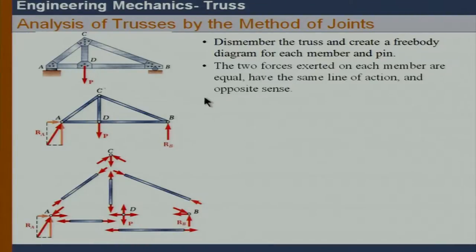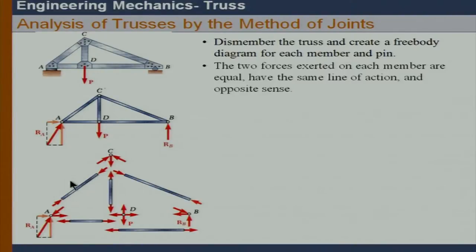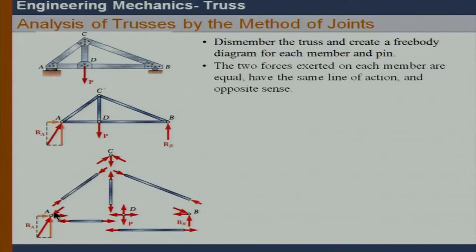As we can see, for any member — say member AC — we use directions to represent whether it is in compression or tension. If AC is in compression, we represent it accordingly and, as per Newton's third law, at the pin or joint it will be reversed. So at each end of the member, the force shown at the joint is in the reverse direction.